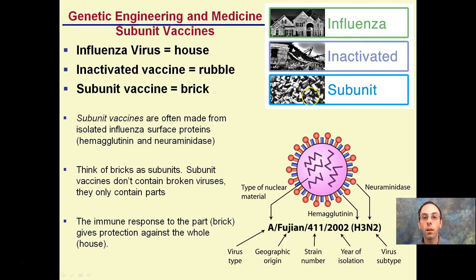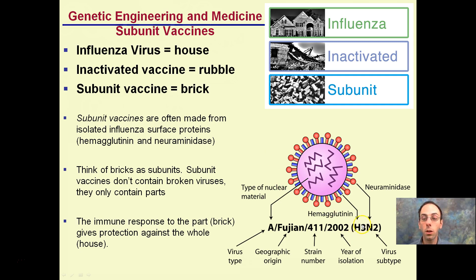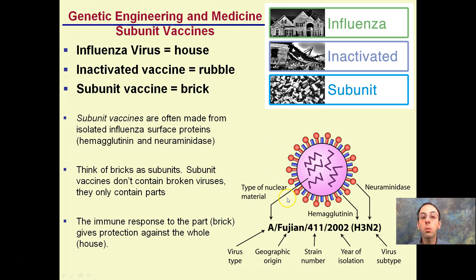Subunit vaccines use just bricks — no doors, no roof, no windows. You can't make the whole house out of just bricks. Subunit vaccines are often made from isolated influenza surface proteins. The surface proteins are important for cell-to-cell recognition. H1N1 and H3N2 refer to some of the co-proteins of particular viruses. These subunit vaccines don't contain broken viruses — only the surface proteins. The immune system builds a response to the co-proteins, which it would recognize anyway.